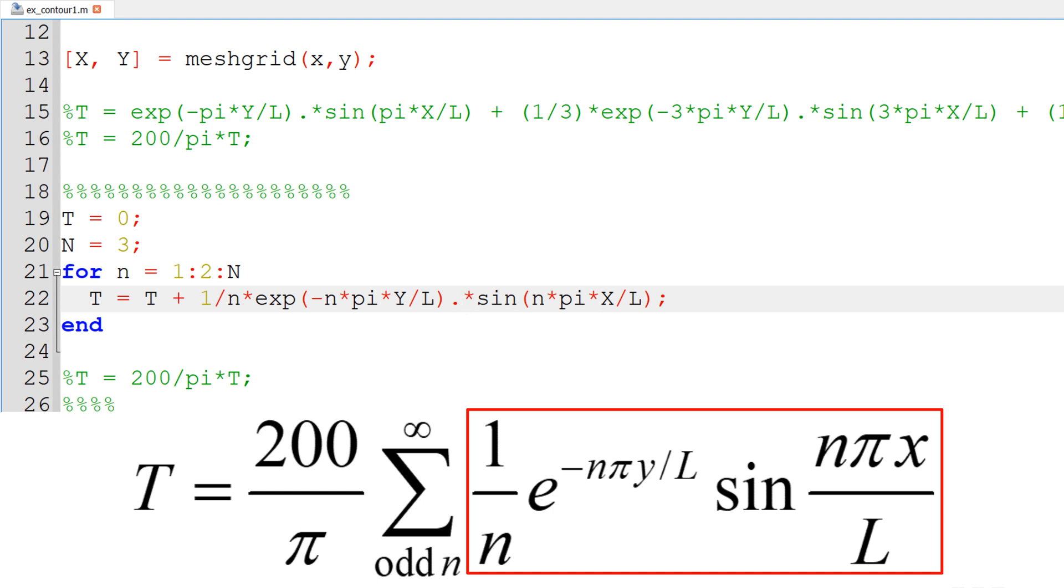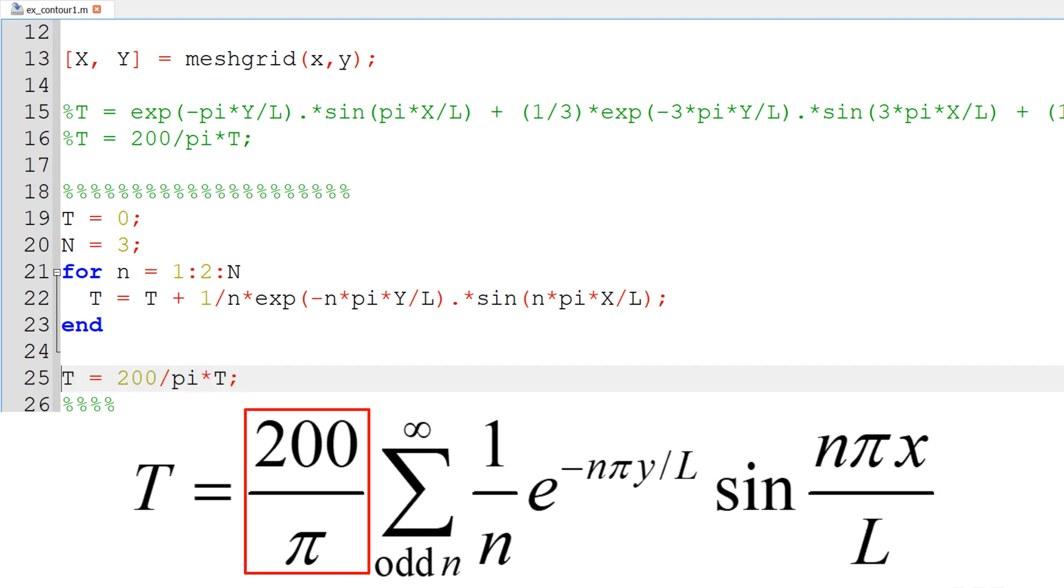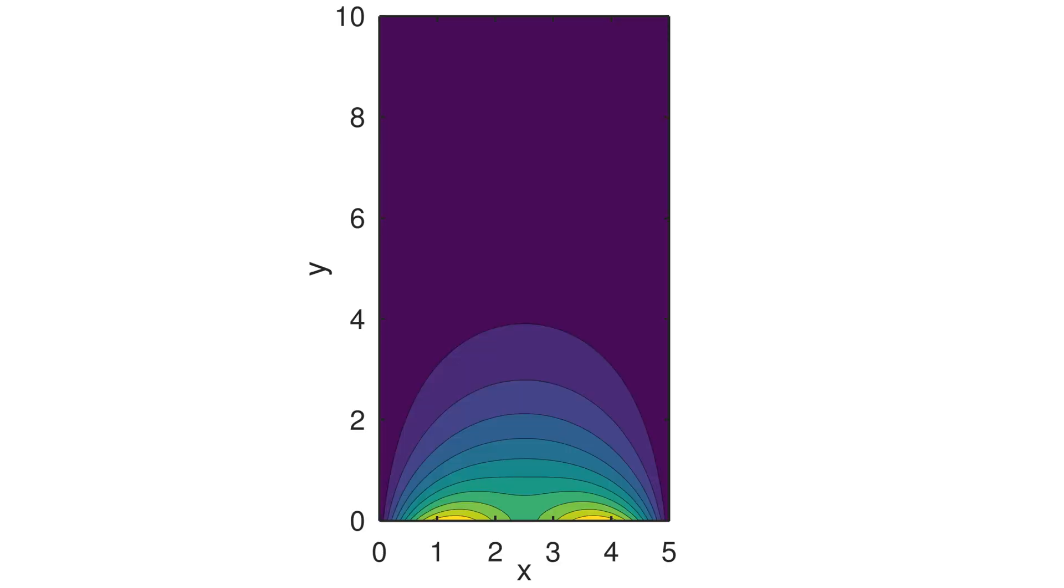So that you can operate it as an element wise multiplication. So this term is going to be added as you loop it. So that we need to add a coefficient 200 over pi. So we can take care of it at once at the end. So when you run it again, you can see the same result.